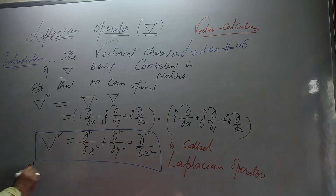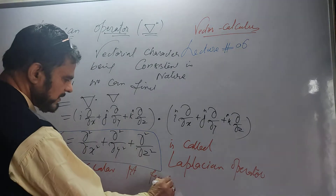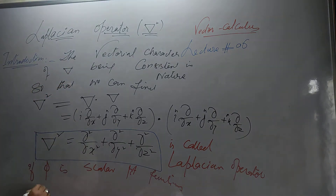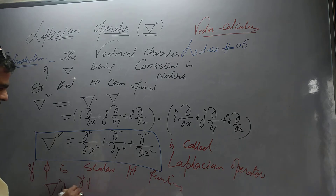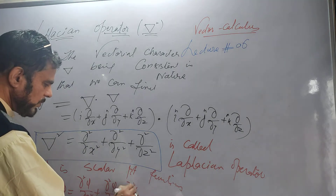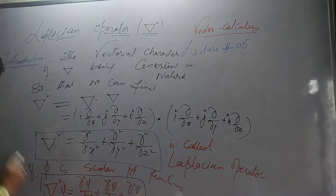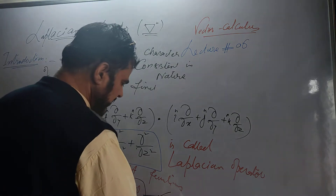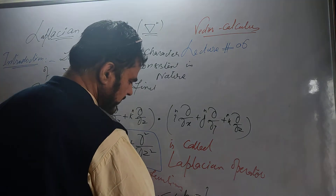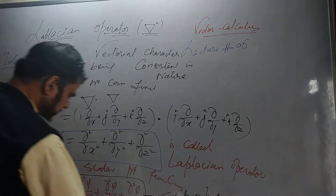If phi is a scalar point function, then delta squared phi equals ∂²φ/∂x² + ∂²φ/∂y² + ∂²φ/∂z². When you operate the Laplacian operator with a scalar point function phi, this expression gives you a scalar function.